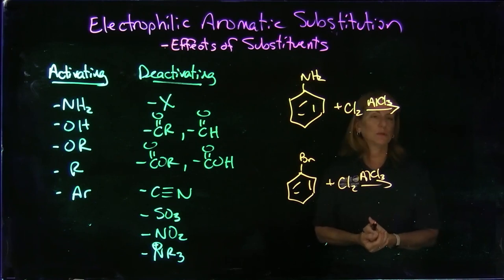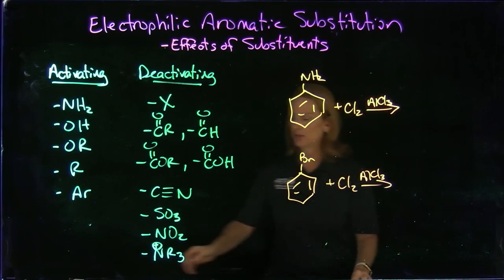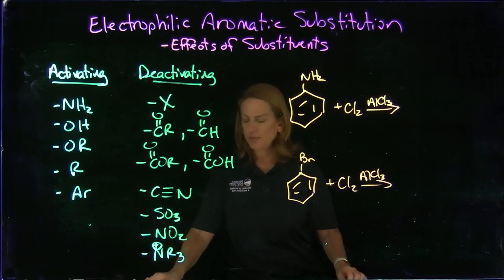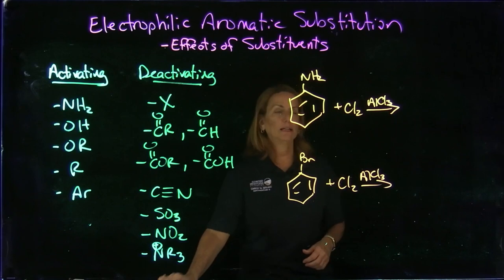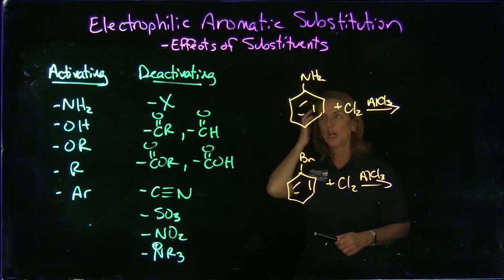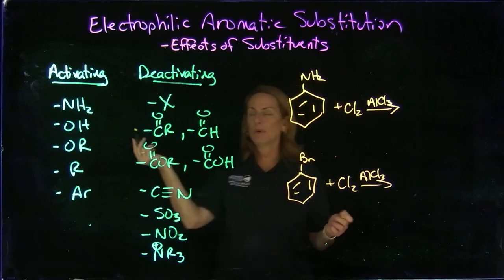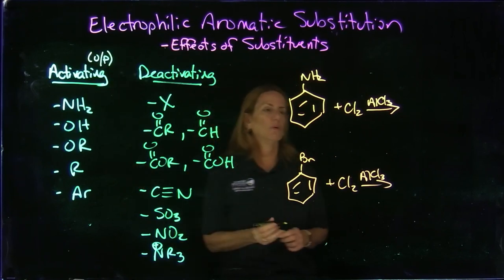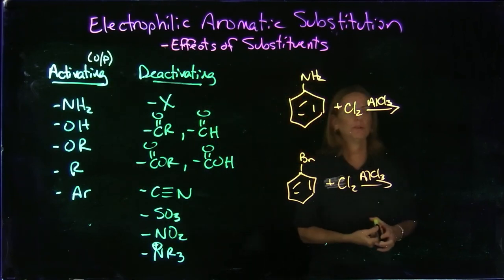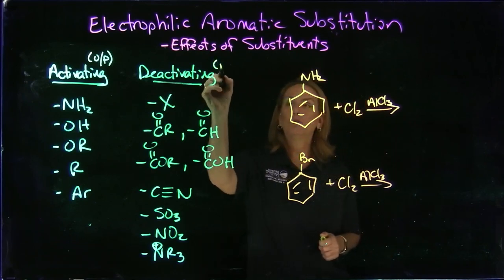Now the question is, where does the chlorine go? That's the interesting part. I'm not going to go through all of the mechanisms, but generally what happens is, when it's an activating group, the new group will go ortho and para. So you will get two products. When it's deactivating, the new group will go meta.